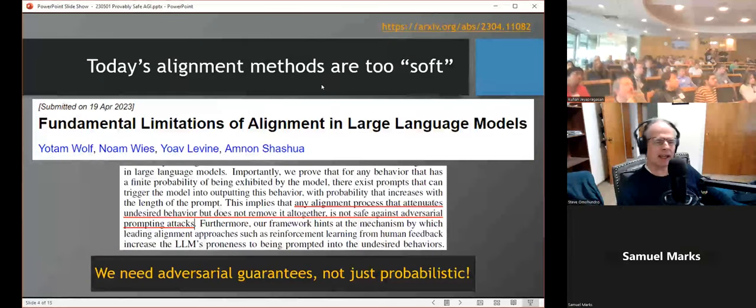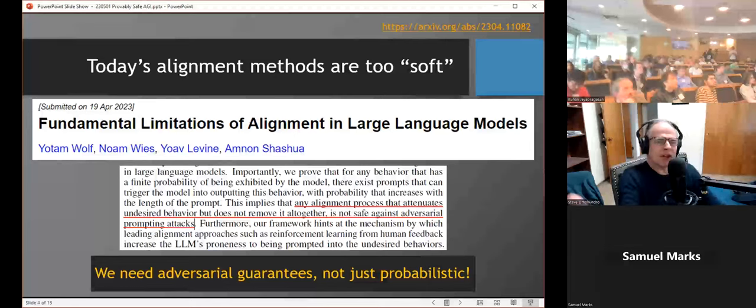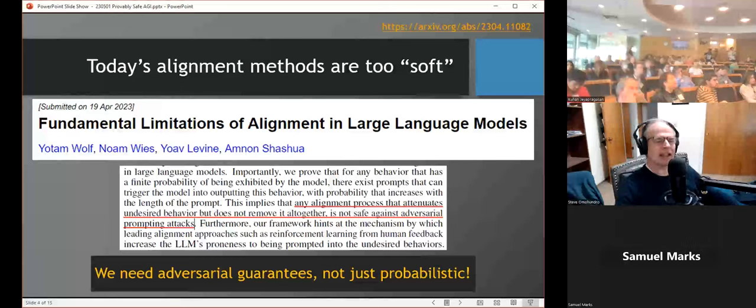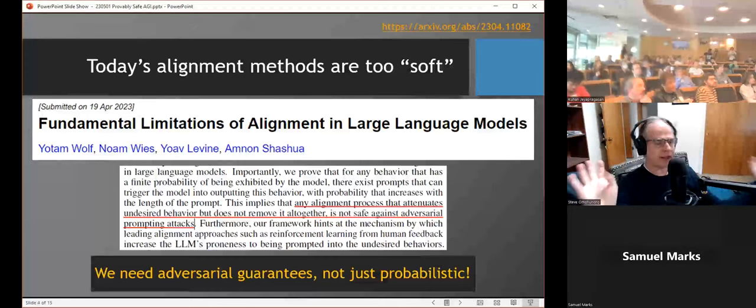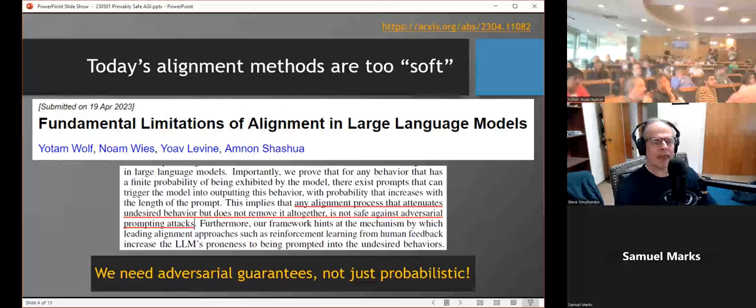Many people are working on alignment, which is great, trying to get powerful AI systems to have values and goals aligned with human values. But in my opinion, today's approaches are a little too soft to really solve the problem. Here's an example of a paper from a couple weeks ago about alignment of large language models in which they conclude that any alignment process that attenuates undesired behavior but does not remove it altogether is not safe against adversarial prompting attacks. This is just one of many examples showing that we don't just need probabilistic guarantees. We should really think of this in a security mindset and we really want adversarial guarantees. Any little improbable situation of a sufficiently smart system will zoom right in on that and exploit it. So I believe the alignment work is fantastic, we really need it, but we also need guardrails. We need hard guarantees and proofs that certain bad things won't happen.